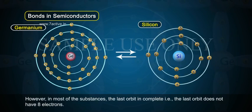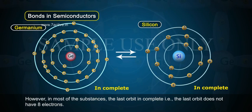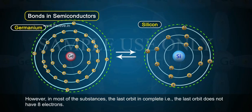However, in most of the substances, the last orbit is incomplete, i.e., the last orbit does not have 8 electrons.